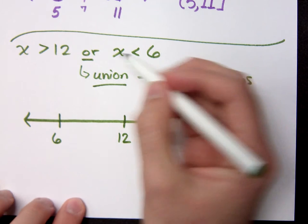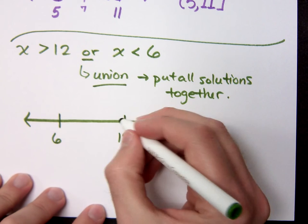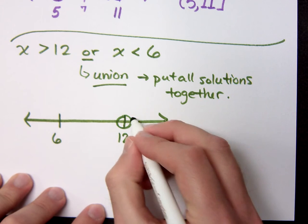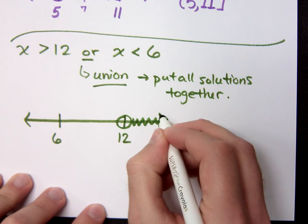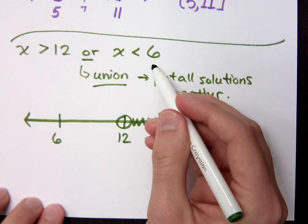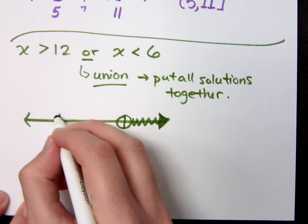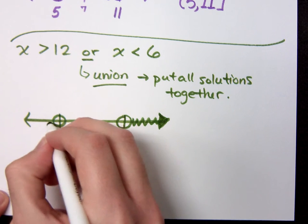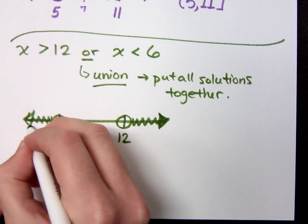So if I look at x is greater than 12, that would be an open circle at 12 and shading out to the right. X is less than 6 means what? Open at 6 and shading out to the left.